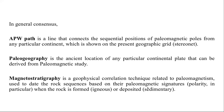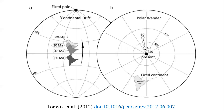Another application of paleomagnetic data sets is determining the ancient location of any particular plate. Magnetostratigraphy is a geophysical correlation technique related to paleomagnetism, obtained from paleomagnetic data sets, useful for understanding the polarity at the time a rock was formed (igneous) or deposited (sedimentary). Paleomagnetic study is generally useful only in igneous and sedimentary rocks, as metamorphic rocks do not preserve magnetic mineral behavior as well.